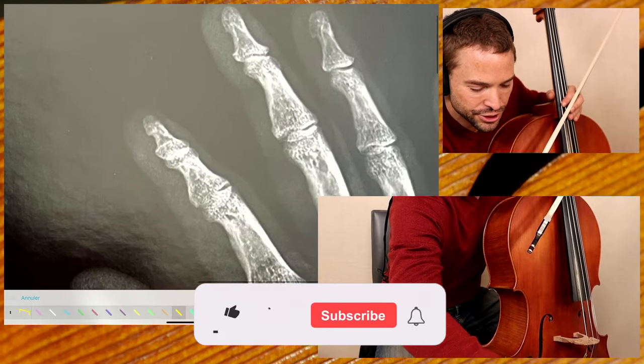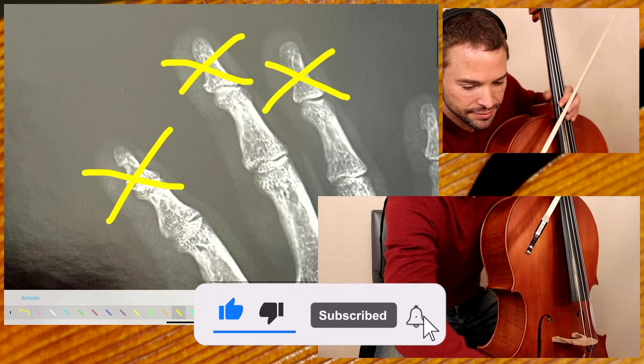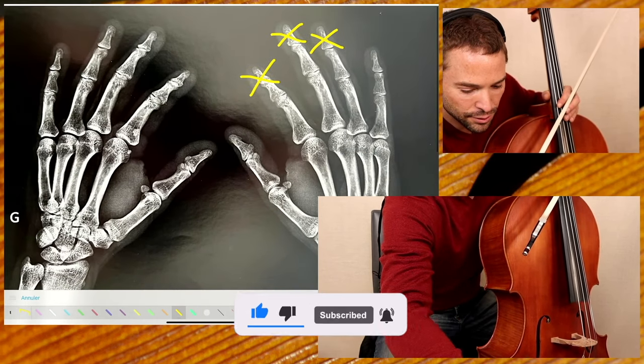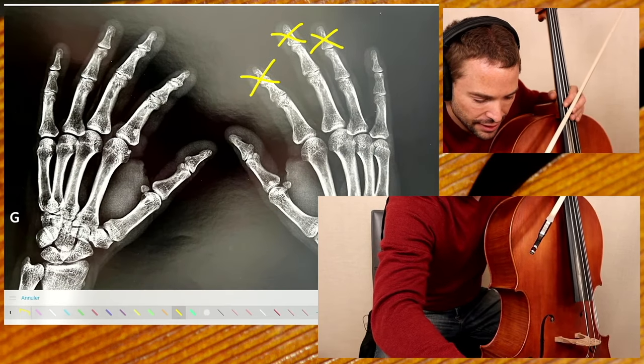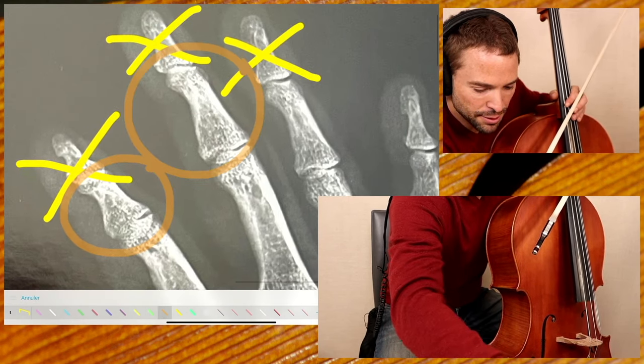So the part of the hand that's holding the cello bow is not the tip. This bone right here. The part of the hand that holds the cello bow is going to be this. What is this bone called?